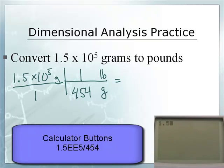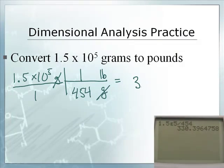Now the 454 is on the bottom, so you're going to need to cancel the grams. Let's put this in calculator. 1.5 second EE 5 divided by 454 gives us 330.3964758, and that would be pounds.